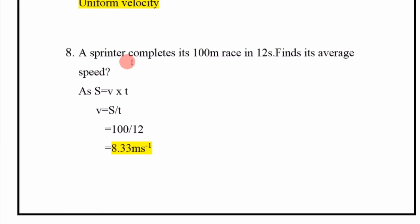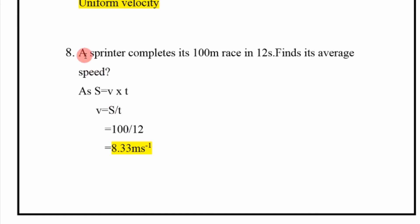A sprinter completes a 100 meter race in 12 seconds. Find its average speed. Using V equals S divided by T, we put the values and get speed equal to 8.33 meters per second.